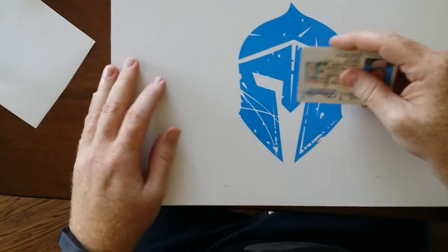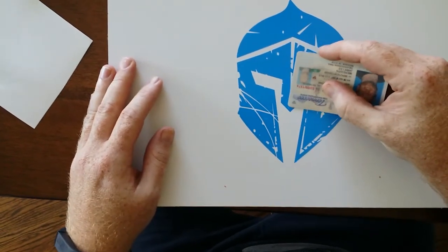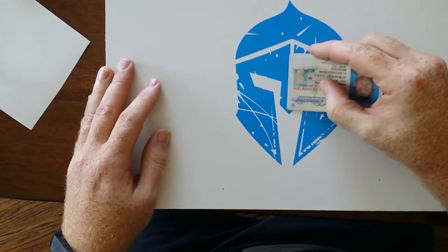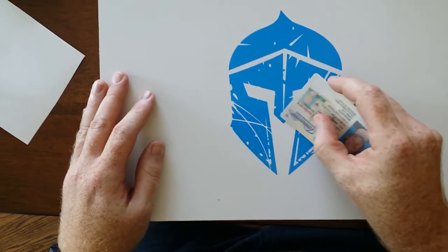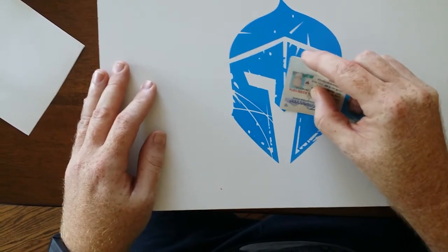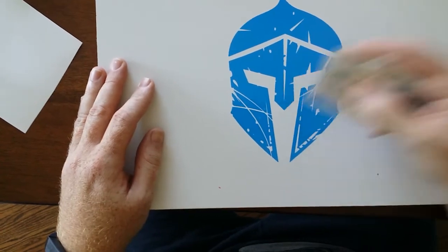Once you do that, then you can come back and very gently, don't apply too much pressure, you can kind of push until the air bubble is right up along the edge of the sticker and it'll go away.